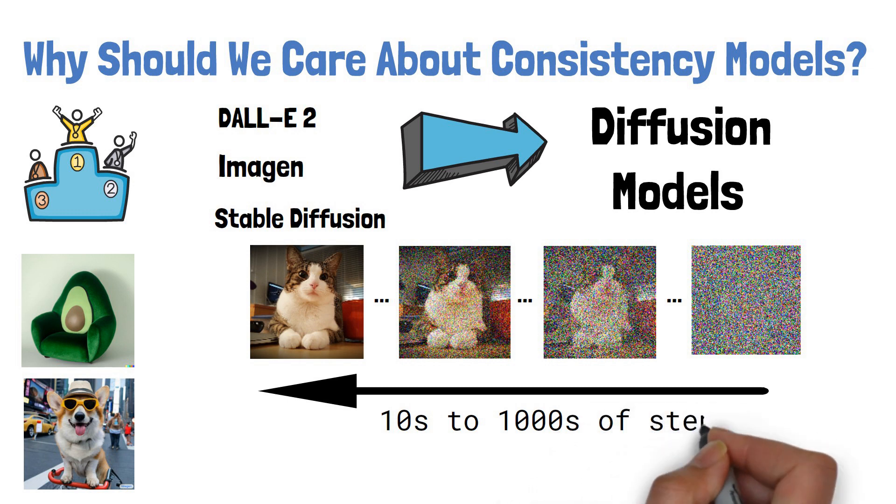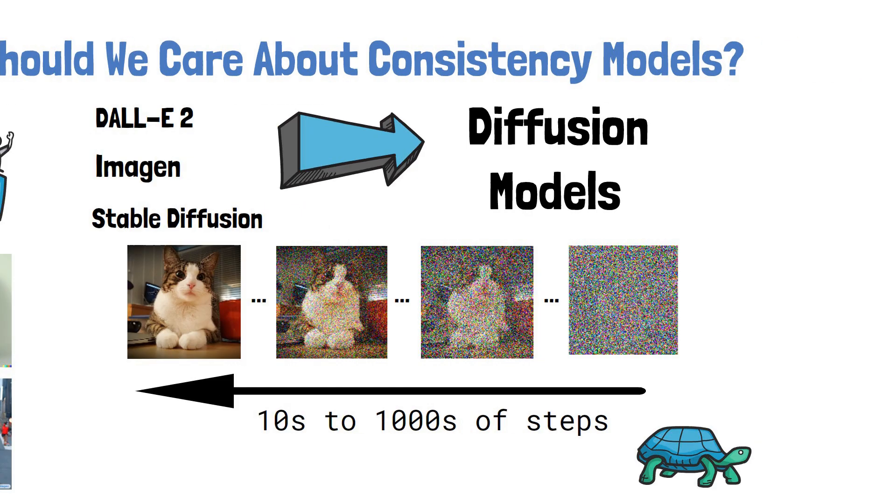Which can get quite slow. So, for example, using diffusion models in a real-time application is not a good fit. Let's move on to see how consistency models can help.